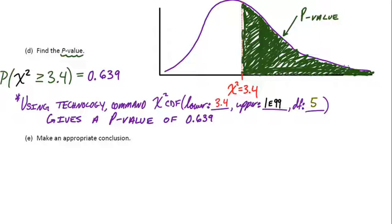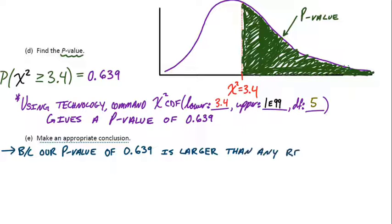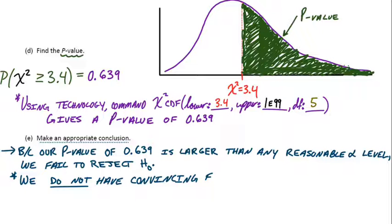So the final part here, part E, says make an appropriate conclusion, and we have to use this p-value. So that's a huge p-value, meaning we would absolutely fail to reject the null hypothesis. We didn't even define an alpha level, but that's way bigger than any alpha level we would ever use. So we can say because our p-value of 0.639 is larger than any reasonable alpha level, we fail to reject the null hypothesis. And we also have to give a statement that says what this means in context. So if we fail to reject the null, that means we do not have convincing evidence of the alternative. In other words, we do not have convincing evidence that the die is actually unfair. So way to go, Liz, you're a ceramics pro.